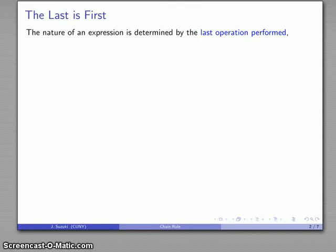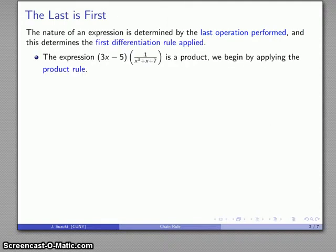It's particularly important to ask yourself the following question: given an expression, what is the last thing that I do? The type of expression you're dealing with is always determined by the last thing that you do, and the importance of this is that the last thing you do corresponds to the first thing you'll worry about when taking a derivative.